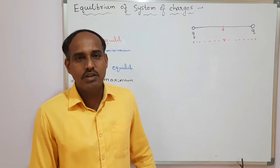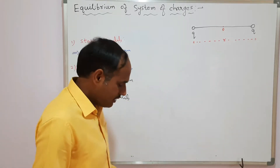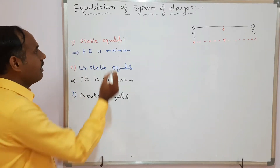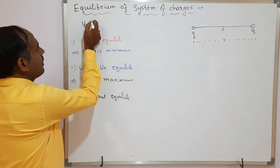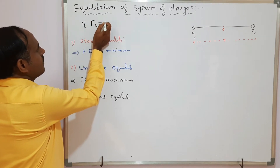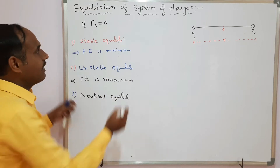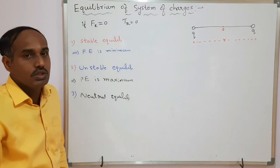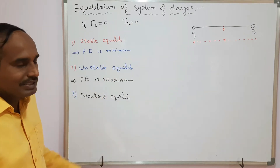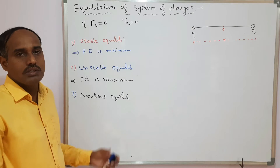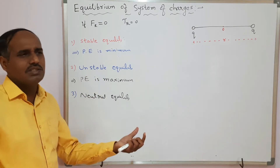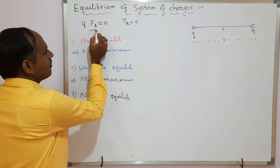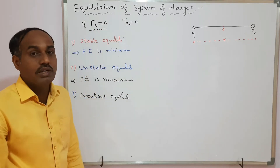In today's video we will discuss equilibrium of system of charges. From mechanics, whenever any body or system is said to be in equilibrium, it is only when the resultant force on it is zero for translational equilibrium and the net torque on it is zero for rotational equilibrium. Similarly, we are going to discuss the equilibrium of system of charges — whether charged or uncharged bodies — the condition is the same: for translational equilibrium, the resultant force on it should be zero.